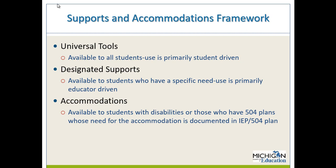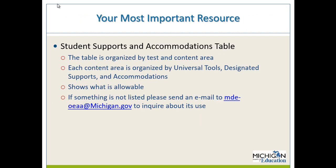Anything titled as an accommodation in our resources is only available for students with documented IEPs or 504 plans. There is one very important resource we'll be walking through today: the Student Supports and Accommodations Table. This table is organized by test and content area, then by the three categories — universal tools, designated supports, and accommodations — showing you what is allowable. If something not listed is being used frequently in the classroom, please send us an email at mde-oeaa@michigan.gov.